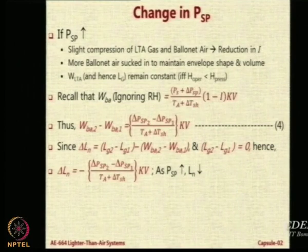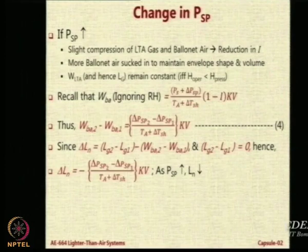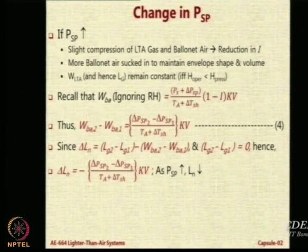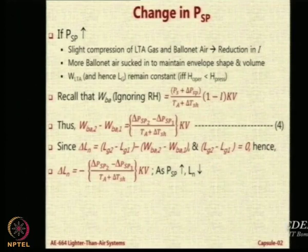Earlier there was some superpressure, now there is a different superpressure. Therefore, the net lift will actually be negative if we increase superpressure — meaning if we increase superpressure, the net lift is going to go down, not up. There is a minus sign there. Why does it go down? Because the ballonet is actually weight, not lift. Air in the ballonet is not helping us — we are forced to put it. So when superpressure increases, more air is sucked in, and the net lift actually reduces.